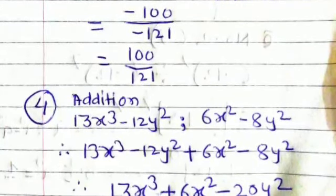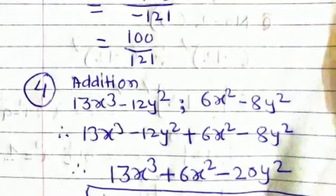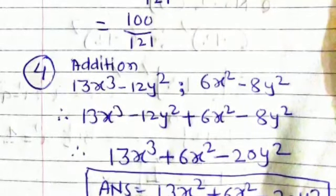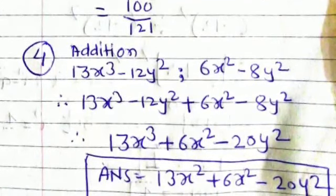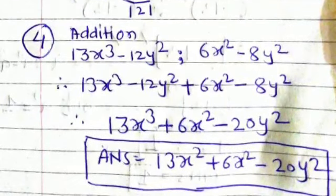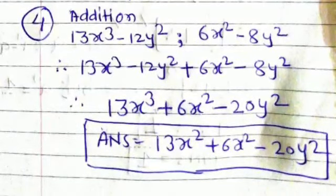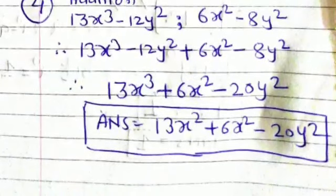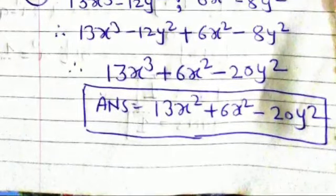And fourth is addition. 13x cube minus 12y square and second is 6x square minus 8y square. Both having minus sign and answer is minus 20y square. Total answer is 13x cube plus 6x square minus 20y square.